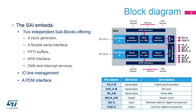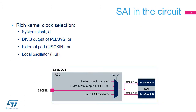In addition, a PDM interface allows the connection of up to six digital microphones. The STM32G4 embeds one SAI instance. The SAI can receive a kernel clock from the system clock, from the DIVQ output of PLL-SYS, from HSI oscillators, or from an input pad, I2S-CKIN. The kernel clock is used by the SAI to generate the timing of the serial audio interface when configured in master mode.